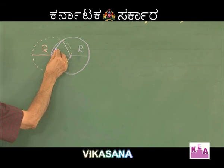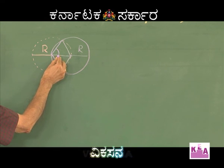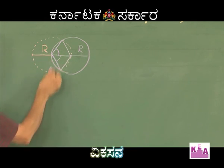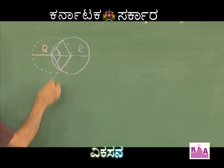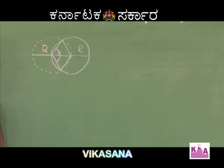This angle is 60°, this angle is 60°, so the total angle subtended is going to be equal to 120 degrees.